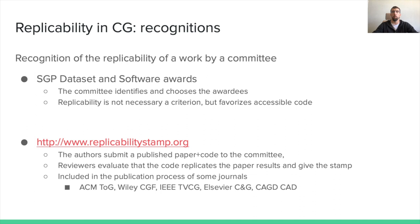Another option is to promote papers by recognizing their replicability. You get a board of expert researchers who evaluate and acknowledge that the paper is replicable. Awards such as the SGP dataset and software awards are given by a committee in charge of identifying and selecting awardees. In contrast, the replicability stamp initiative provides a way for authors to submit their paper and artifacts. Reviewers evaluate if the code replicates the results shown in the paper. This process is included in the publication pipeline of some journals for accepted papers, allowing the stamp to be added as metadata and promoted in the journal.